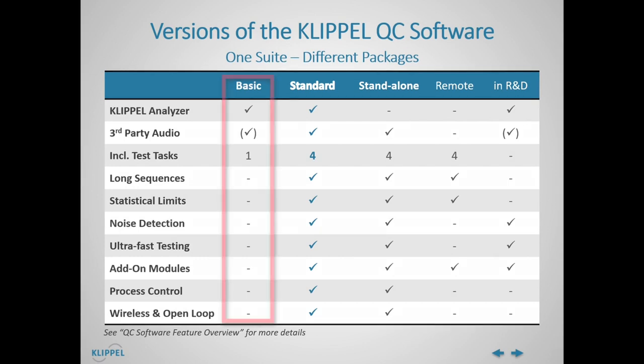The QC Basic software is available in two versions for different applications. The default version provides the most frequently required measurements for fast electroacoustic QC tests based on combined sound pressure and impedance tasks with the Klipple Analyzer hardware. The QC Basic Special Application software, in contrast, is focusing on general transfer function, noise and vibration testing based on spectrum analysis tasks.